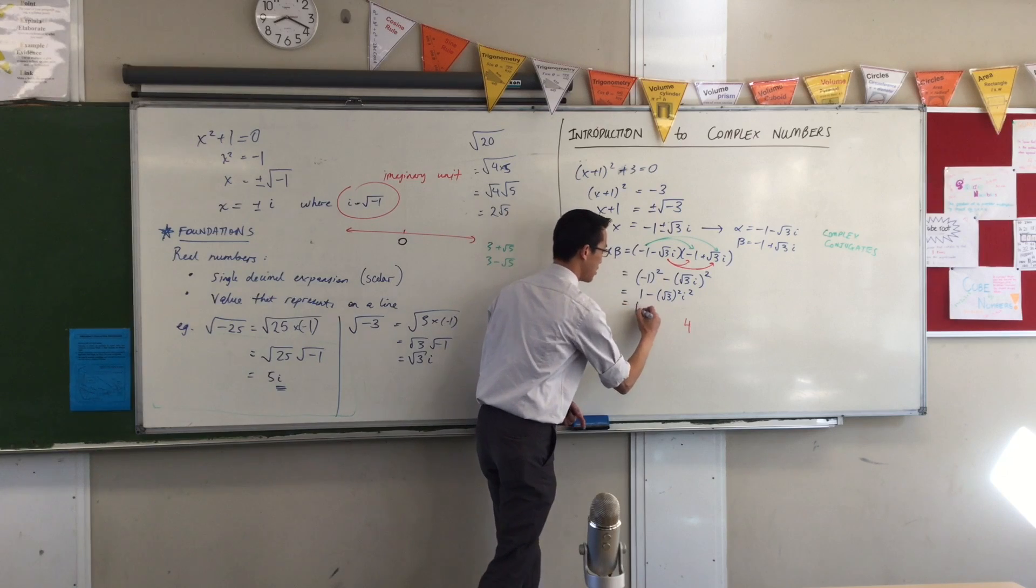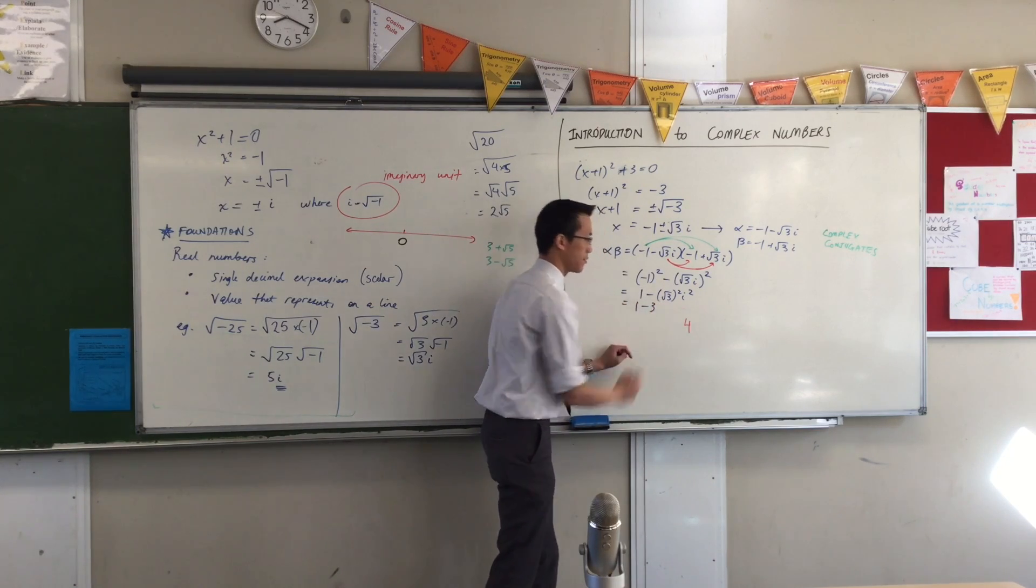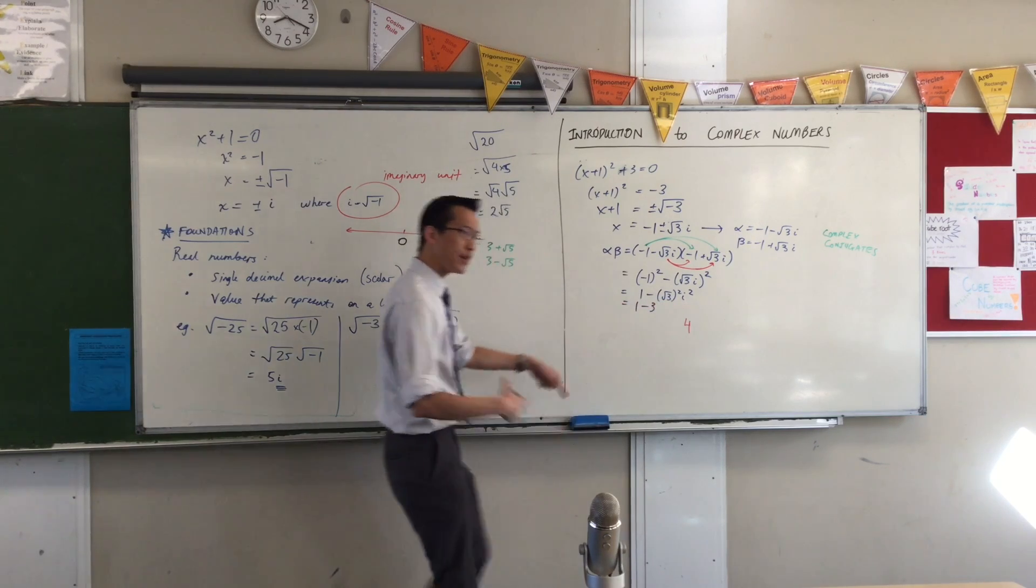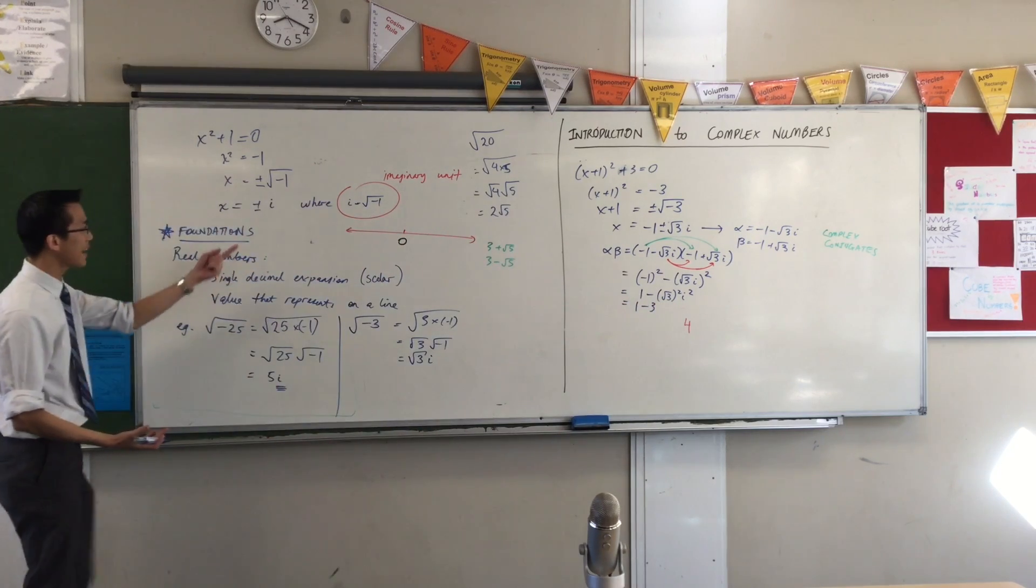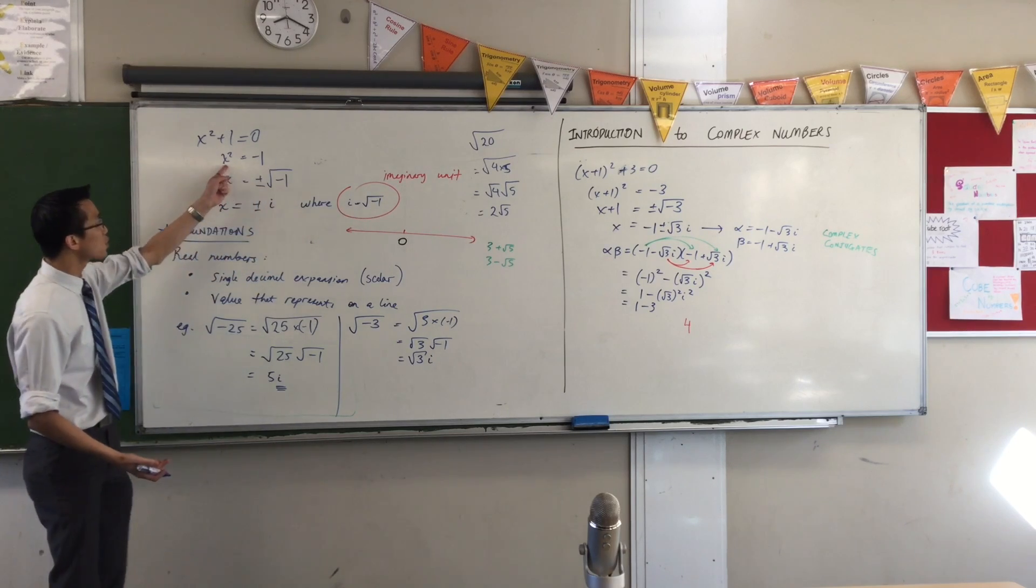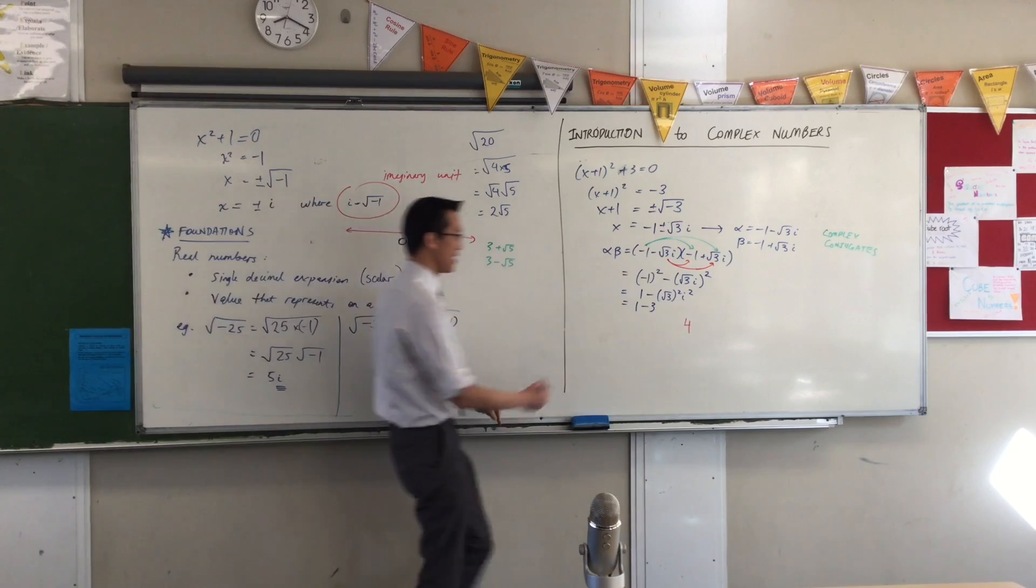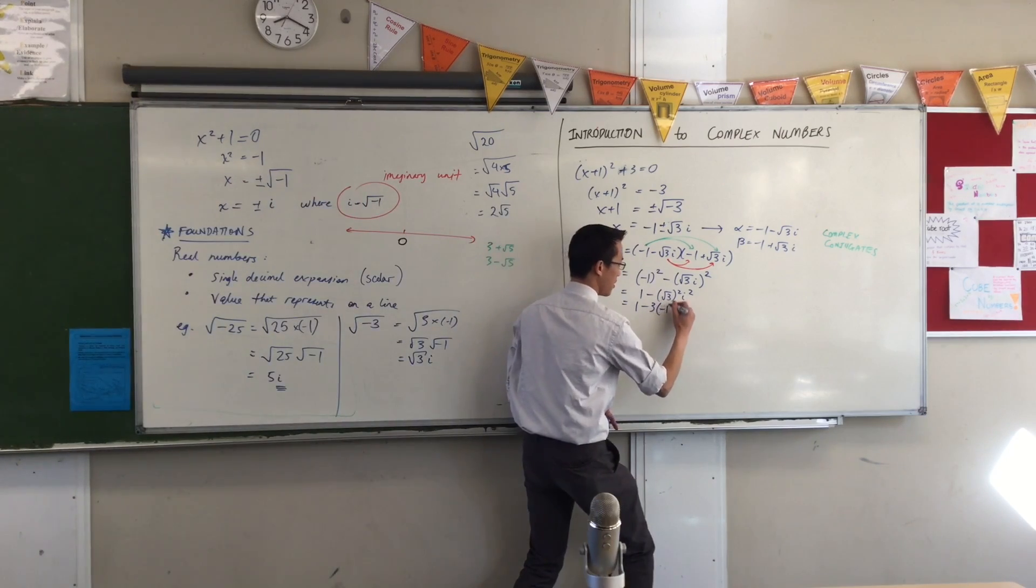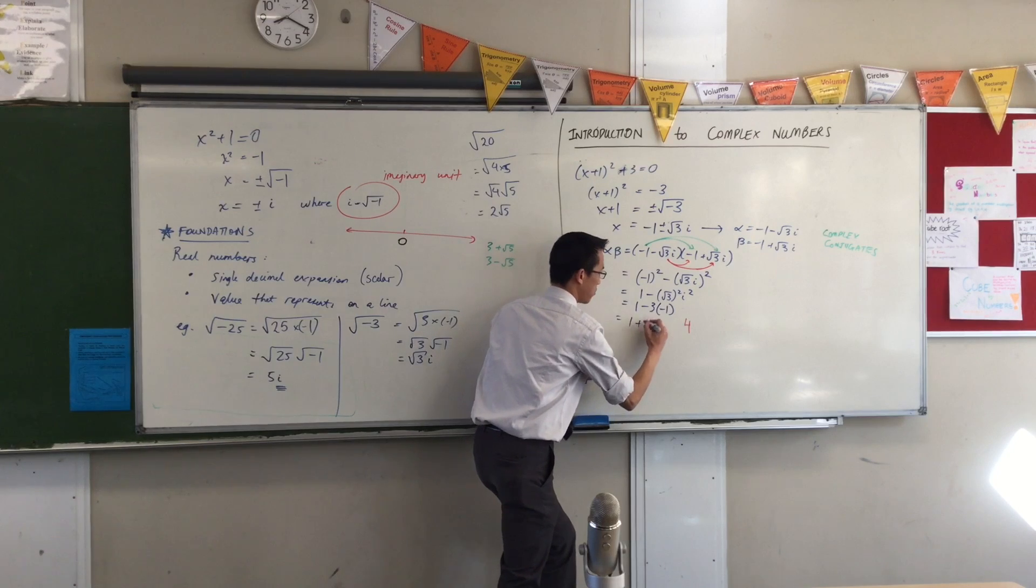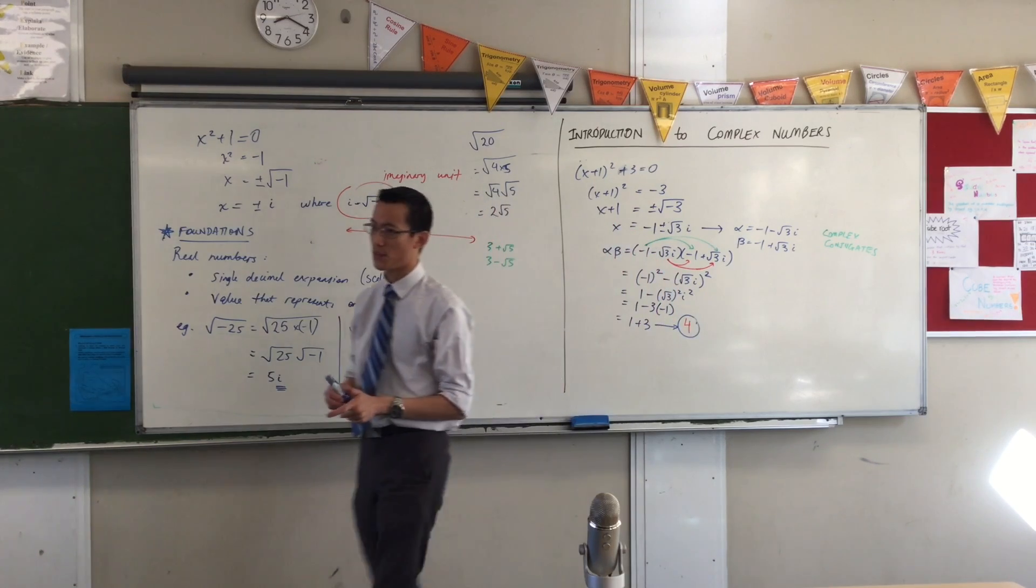√3 times √3 is 3, i². Well, the very way I defined i back in the beginning is it's the square root of negative 1. So if you square the square root of negative 1, you better get negative 1. So this is 3 times negative 1. That's 1 + 3, which, surprise surprise, is 4.